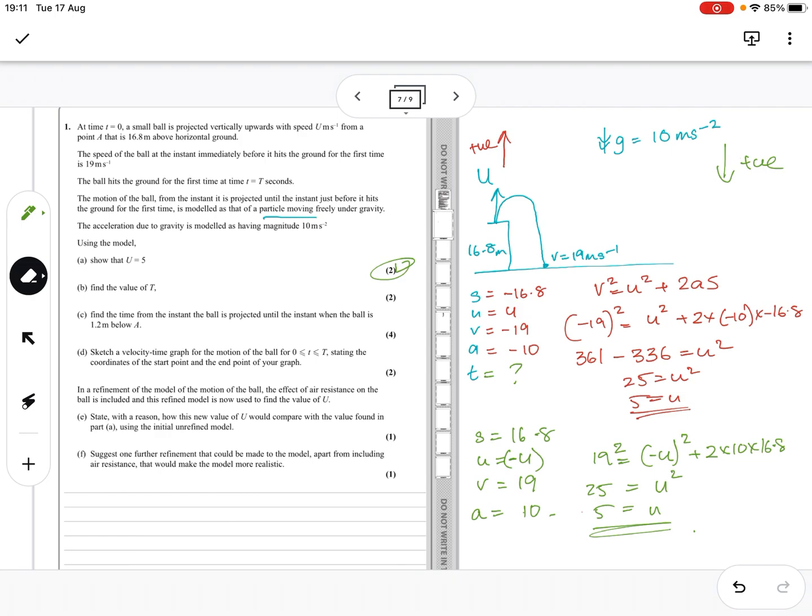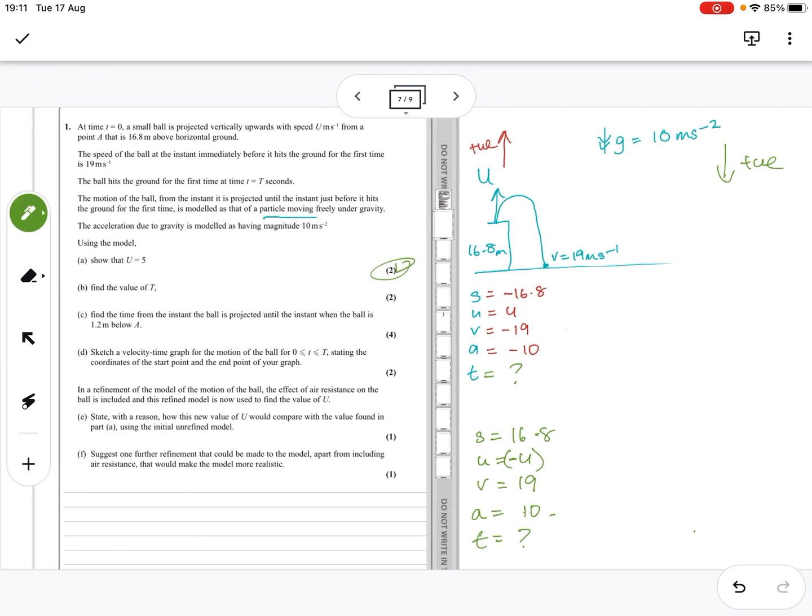Lots of different ways to do this then, but probably the easiest, if we make that 5 and that minus 5, the easiest is to do v equals u plus at. So v equals u plus at. Here, v is minus 19 equals u which is 5 plus minus 10 times t. So then we've got minus 24 equals minus 10 t. So 2.4 equals t.